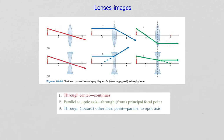For a diverging lens, ray number one is the ray that passes through the center of the lens, so it will not refract and continues along a straight line. Ray number two is incident upon the lens parallel to the optic axis, and then diverges from the optic axis behind the lens; however, its continuation in front of the lens passes through the principal focal point. Ray number three is incident upon the lens in a direction that passes through the other focal point, but behind the lens it refracts parallel to the optic axis. Combining those three rays allows us to find the image of an object placed in front of the lens.